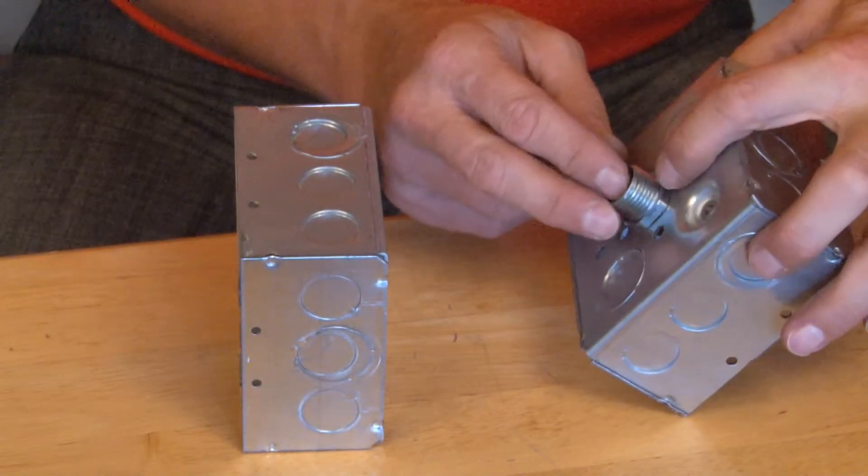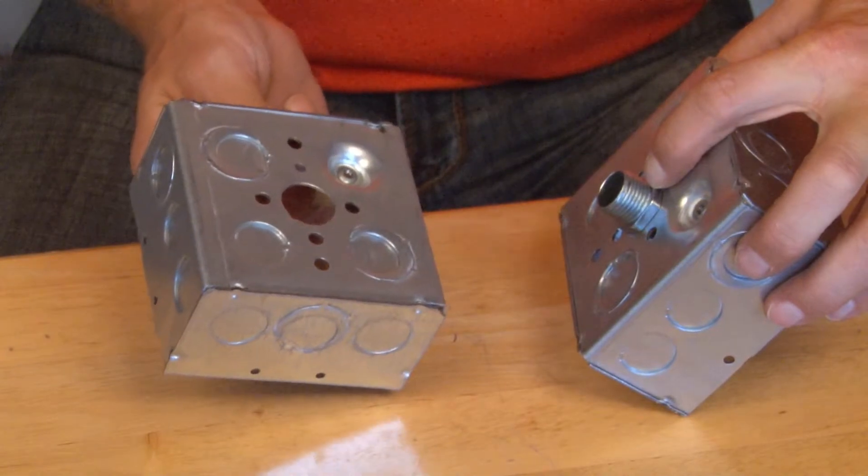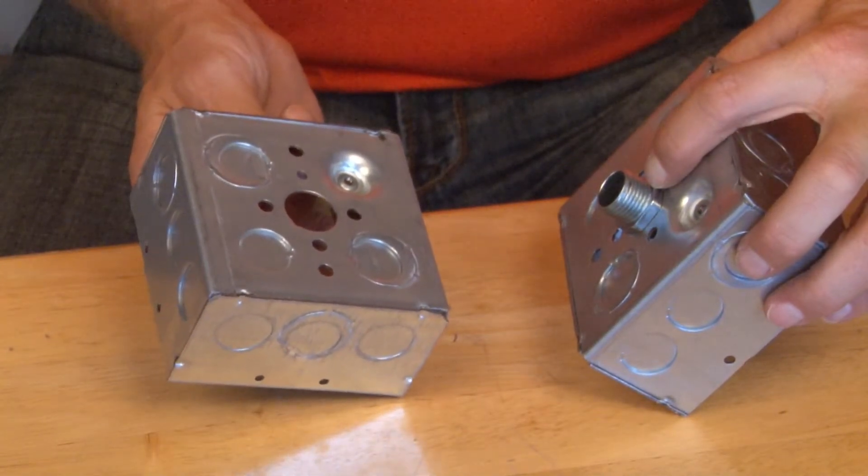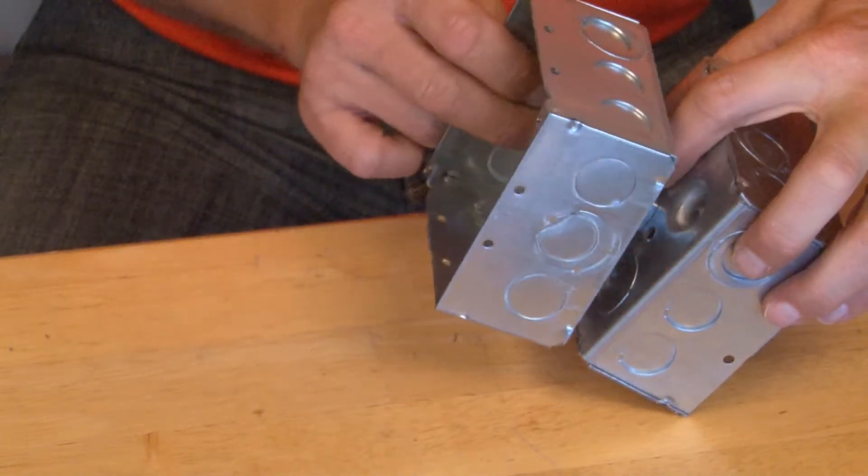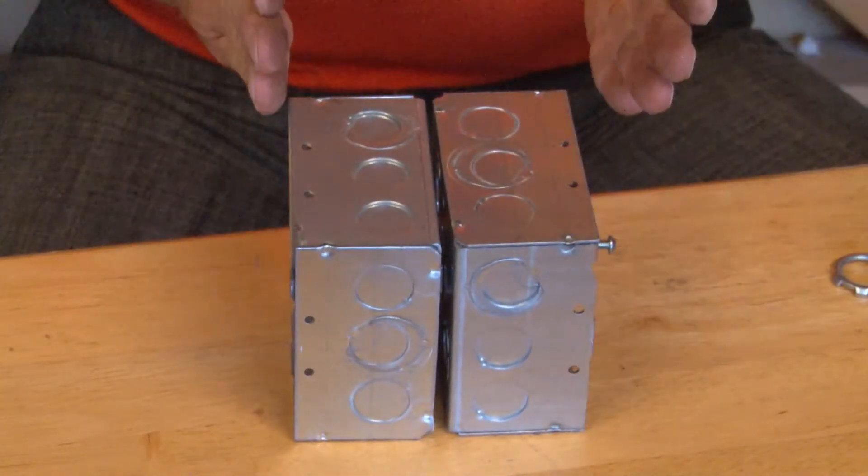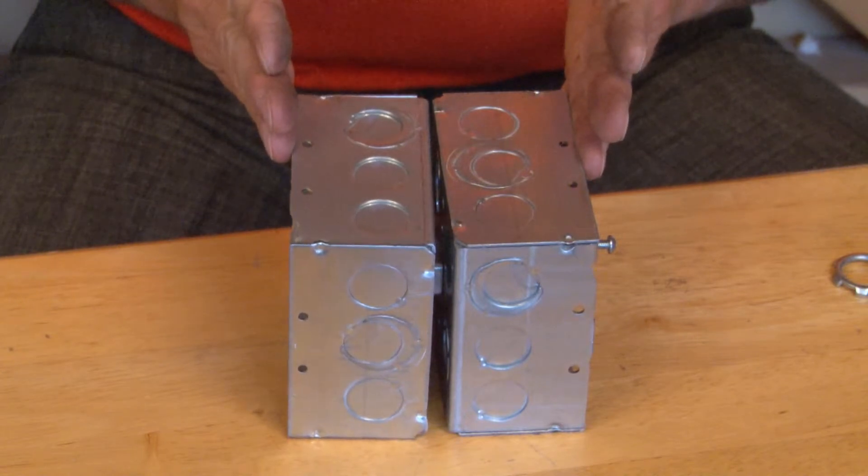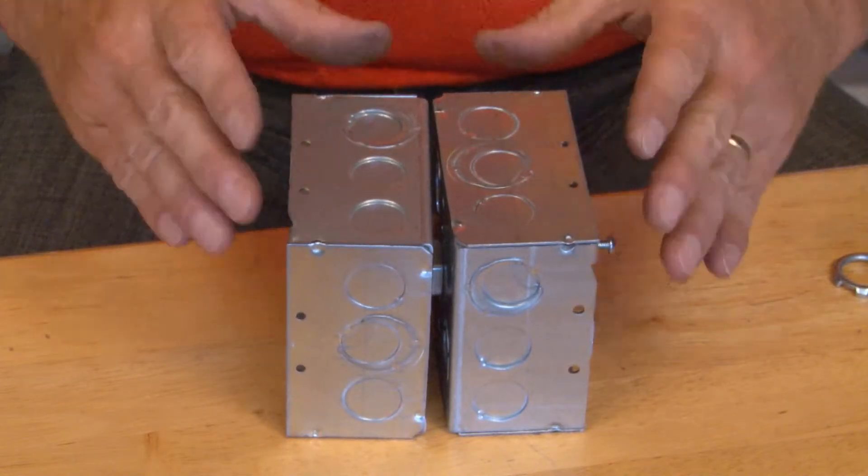So you simply align the 1/2-inch knockouts to go on the box like so. At this point, that's exactly the wall thickness you need for wall studs to fit two 2x4s.